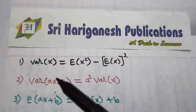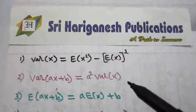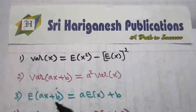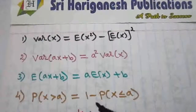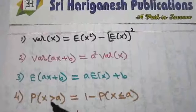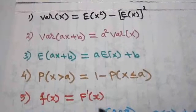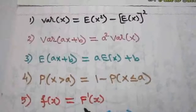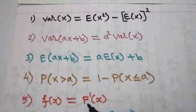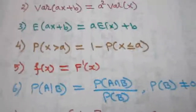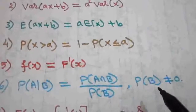Another important formula: Variance of x = E(x²) − [E(x)]². Variance of (ax + b) = a²·Variance(x). And E(ax + b) = a·E(x) + b. The probability of x greater than a can be written as 1 minus the probability of x less than or equal to a. Also, small f(x) is the probability density function and capital F(x) is the cumulative distribution function — this is the PDF and CDF relationship — where small f(x) = F'(x), the derivative of the CDF. Conditional probability: P(A|B) = P(A ∩ B) / P(B), provided P(B) ≠ 0.